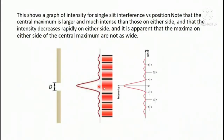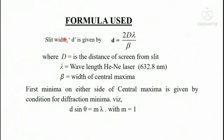The graph shows the intensity of single slit diffraction versus position. We can see that the width of the central maxima is largest compared to the other maximas and it is more intense also. The formula used here is that the slit width is given by d = 2Dλ/β, where capital D is the distance between the slit and the screen, lambda is the wavelength of the helium-neon laser which in our case is 632.8 nanometers, and beta is the width of the central maxima. The first minima on either side of the central maxima is given by the condition d sin θ = mλ.